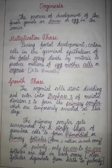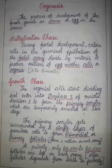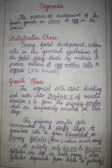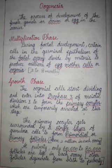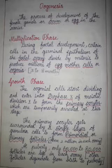The oogonia cells enter meiotic division and arrest at prophase 1, forming primary oocytes. Each primary oocyte is surrounded by a single layer of granulosa cells, forming primordial or primary follicles. When a female child attains puberty, there will be only 60,000 to 80,000 follicles in each ovary.